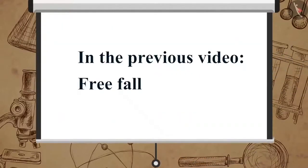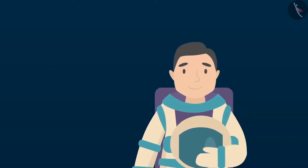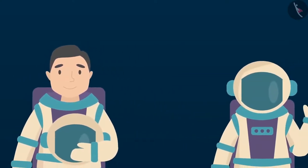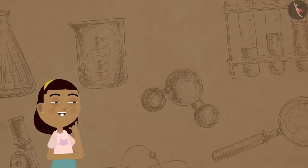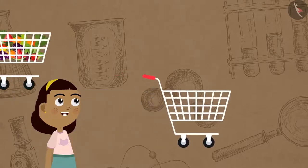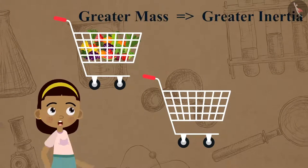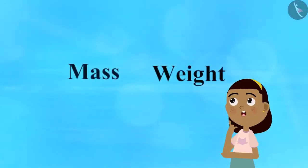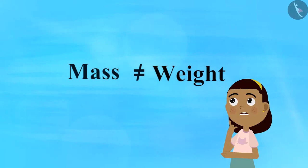In the previous video we learned about free fall. In this video we will learn about mass and weight. Mass and weight are often confused as the same thing, but they are absolutely not. Remember, we learned that the mass of an object is the measure of its inertia, and that greater mass offers greater inertia. Now let's understand more about mass and how it is related to weight, but is not the same as weight.